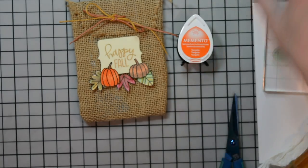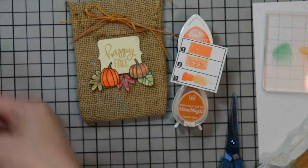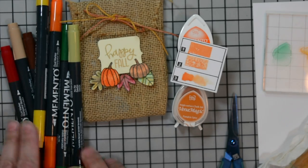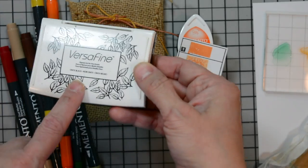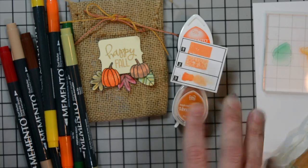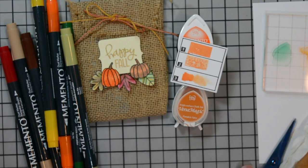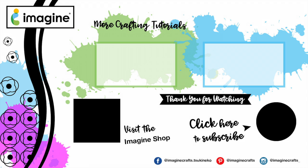Let's go over some of the products we used. We used the Memento ink in Tangelo, Versa Magic ink in Pumpkin Spice, Versa Fine ink in Onyx Black, and our Memento markers in a variety of colors. We used the Pretty Pink Posh stamp set and the Waffle Flowers color combos for ink pads stamp and die set. I hope you found some inspiration today. Please subscribe to our channel.